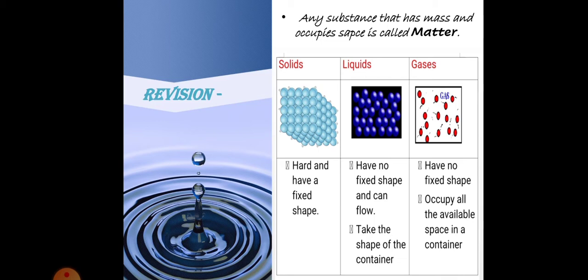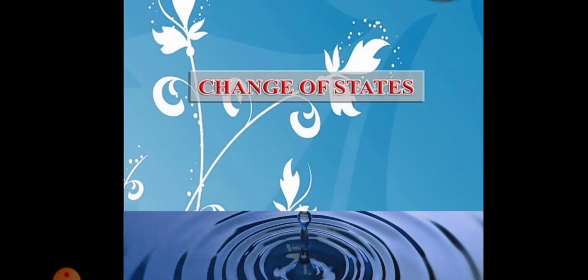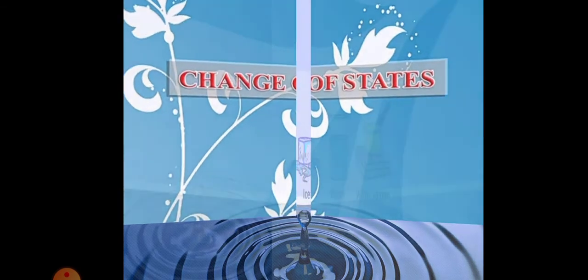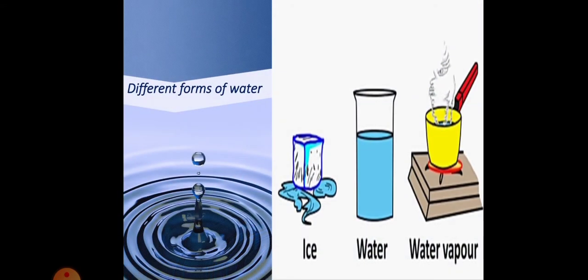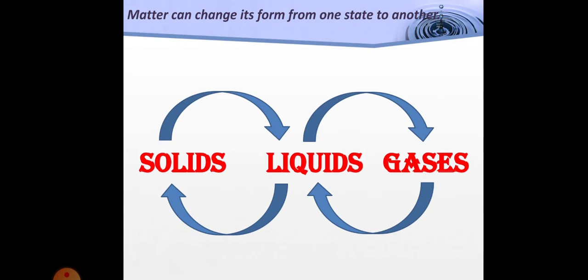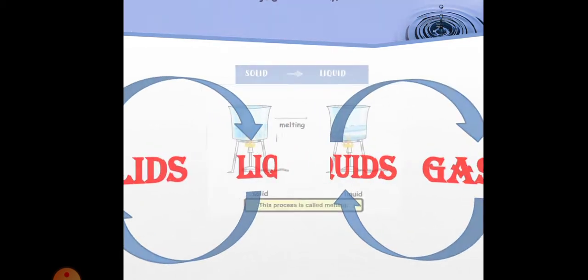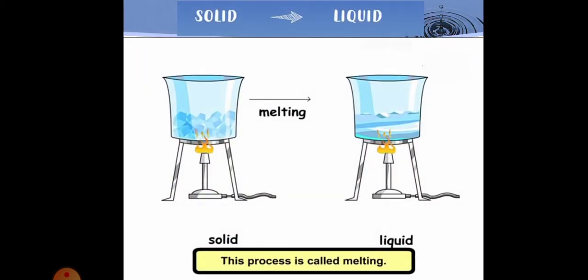Now let's proceed to our next topic: change of states. You have learned in the third standard that there are three forms of water — ice, water, and water vapor. One interesting thing is that matter can change its form from one state to another. Let's first see how a solid changes into a liquid. A very common example is ice.